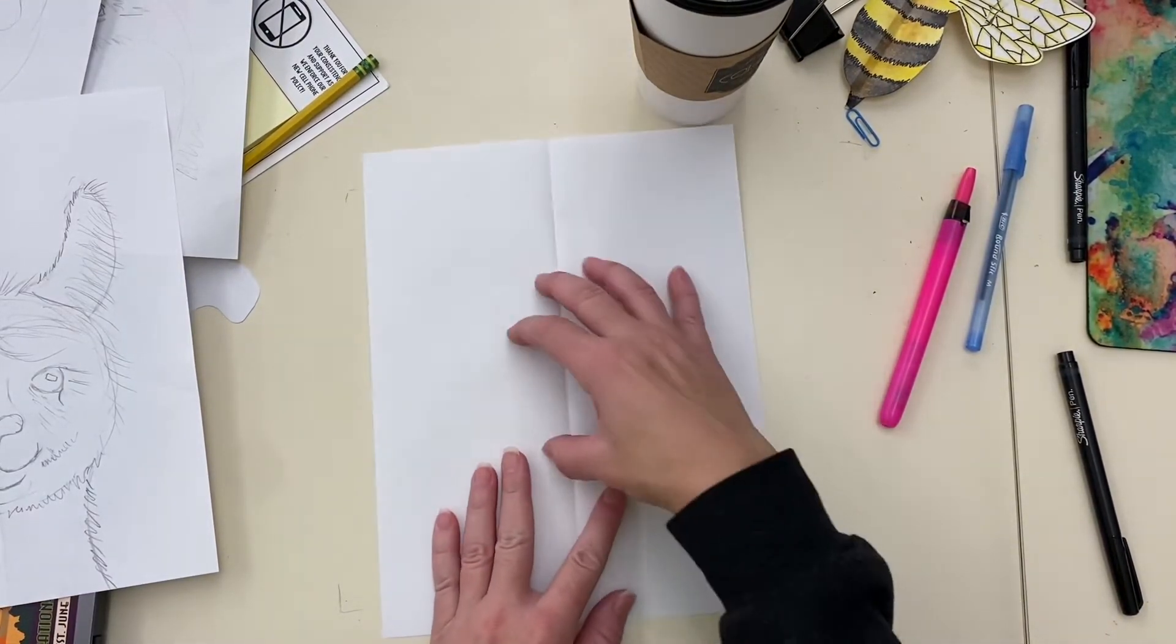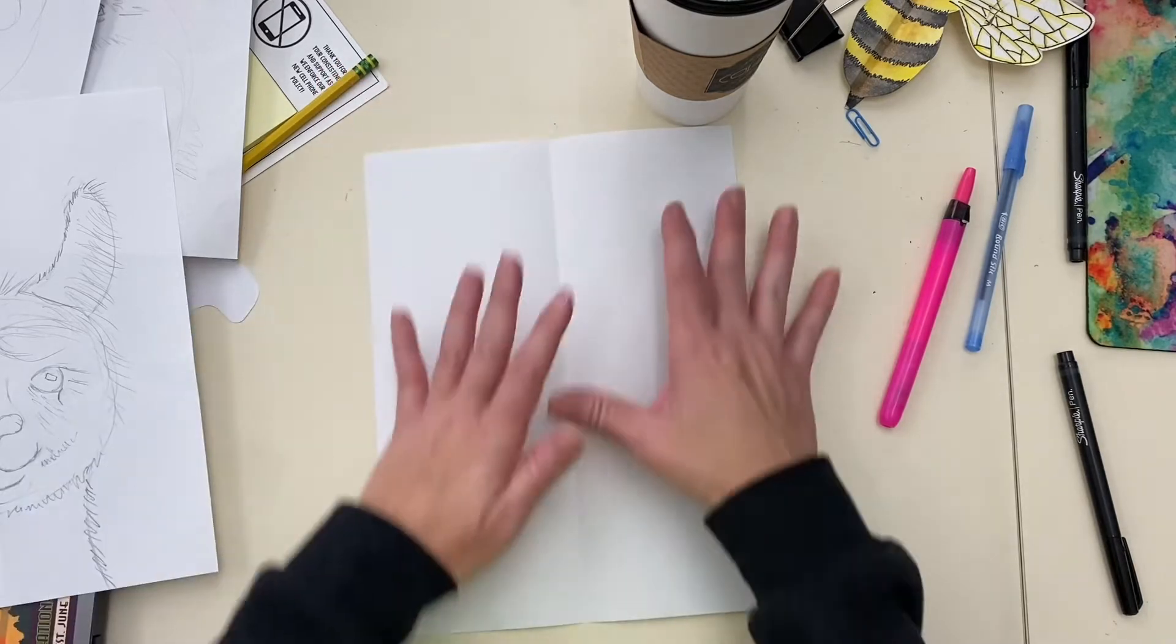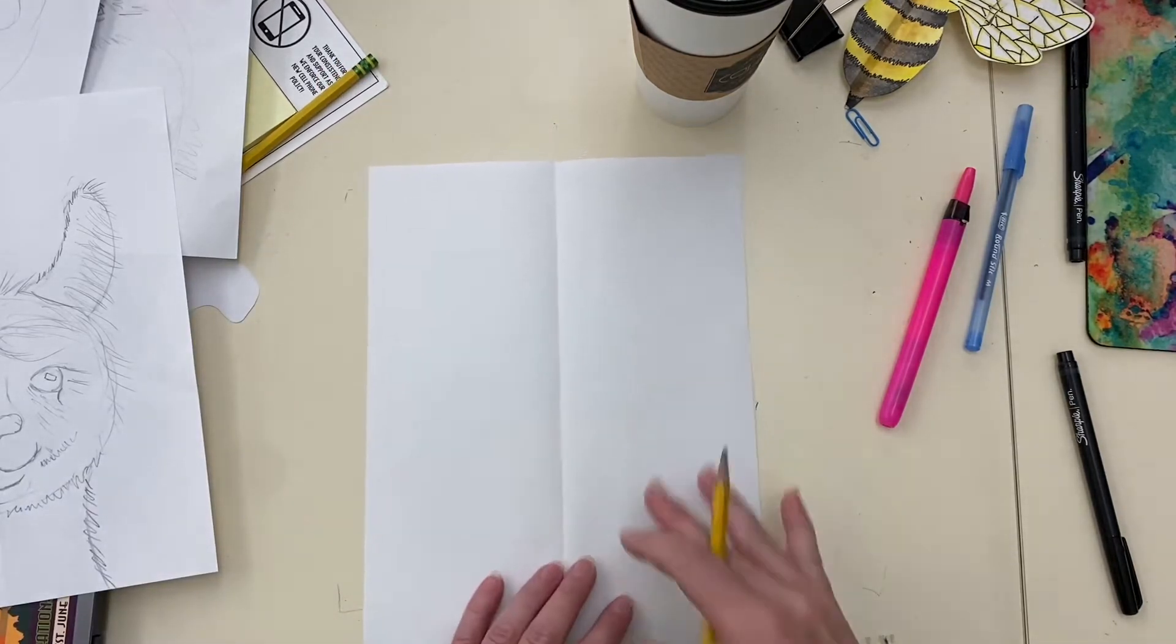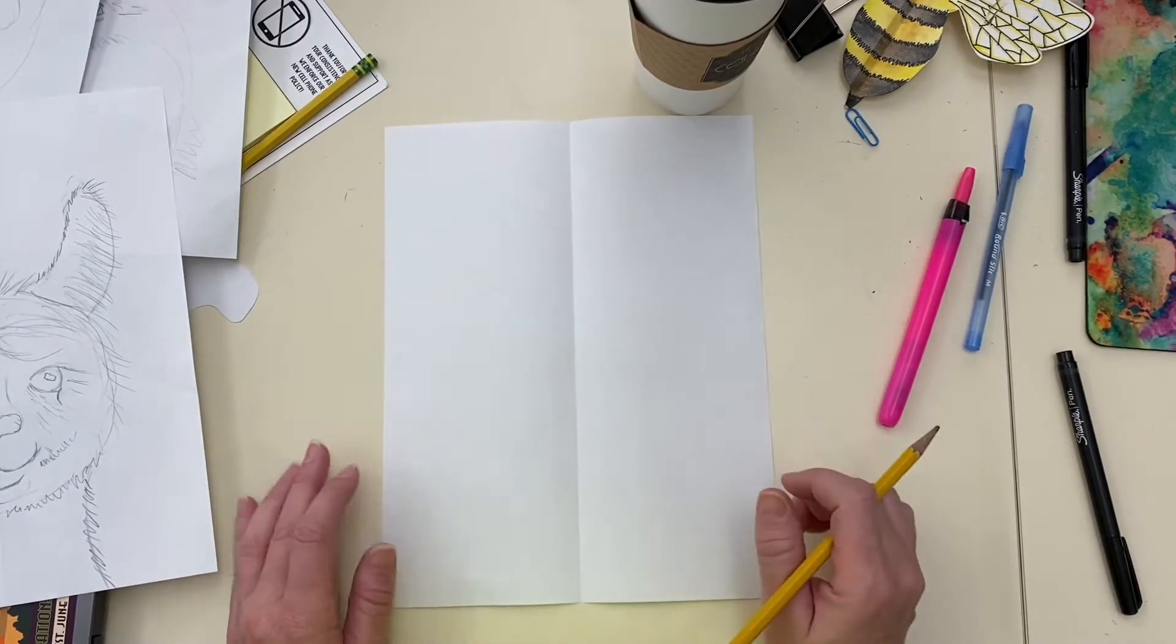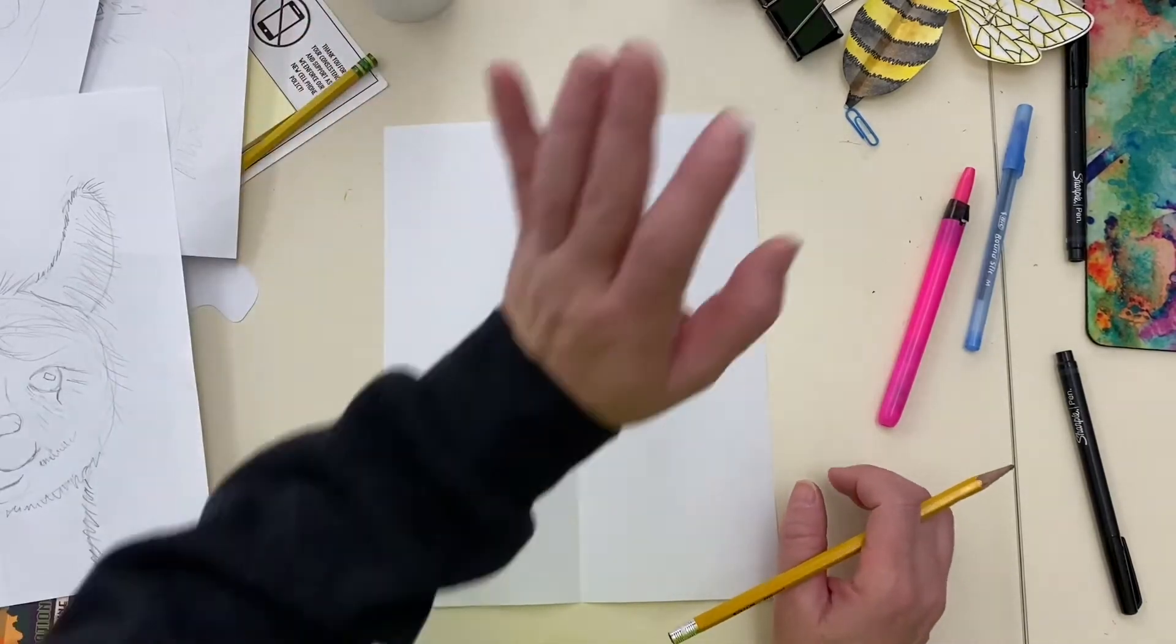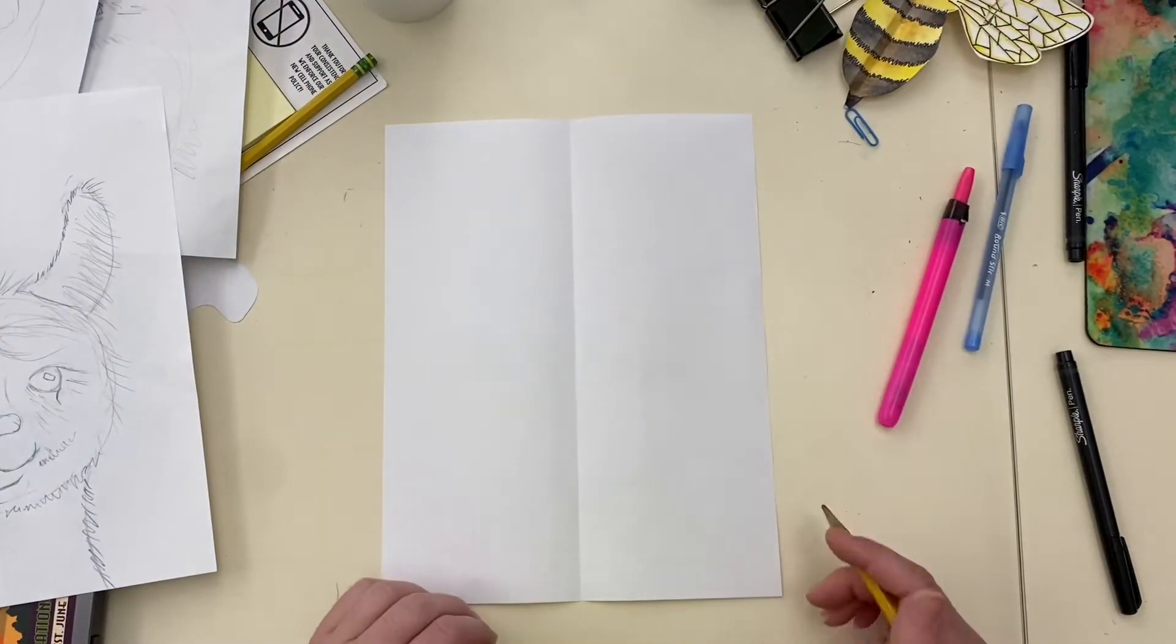Don't draw small heads. I want the whole paper to be full of the head. We're only going to focus on the head of the animal. Make sure you have your photograph pulled up on your Chromebook as you start to draw.